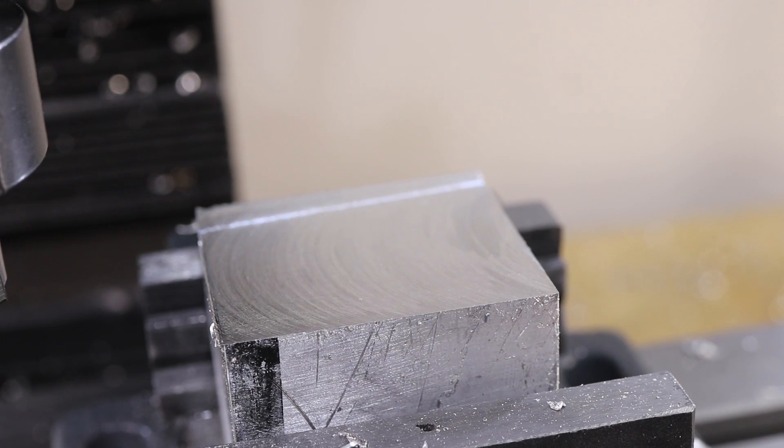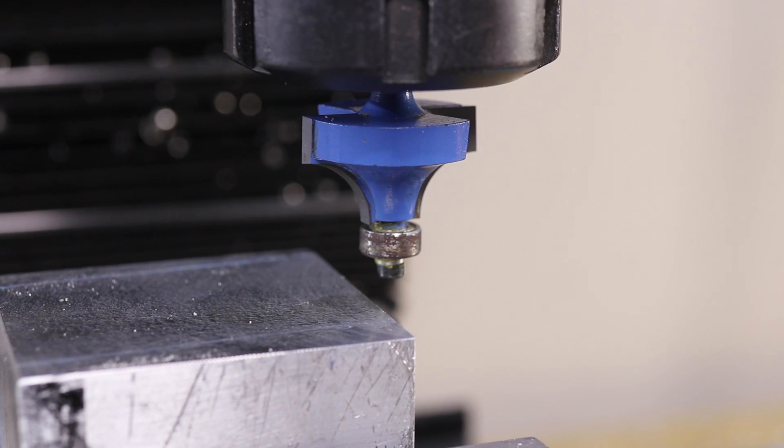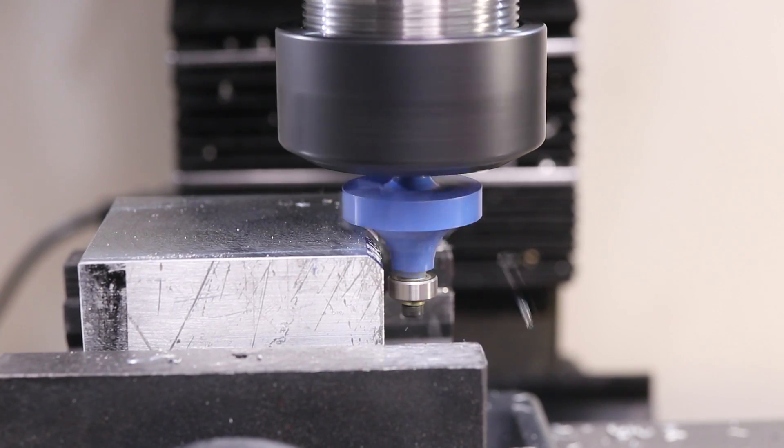Two of the corners need a 6mm fillet so I'll use a rounded corner router bit to form the basic profile and I'll finish it off by hand.